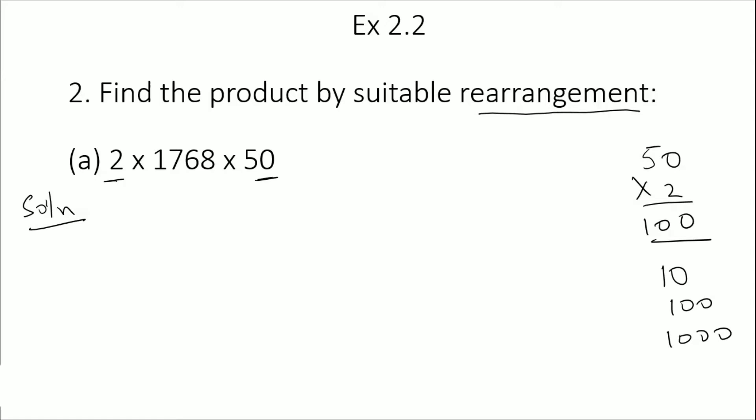What we're going to do is group these together: 2 times 50 times 1768. We have rearranged our numbers, and this is 100 times 1768. We'll multiply 1768 by 1 and then put two zeros, so the answer is 176,800.